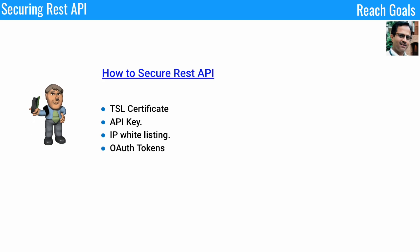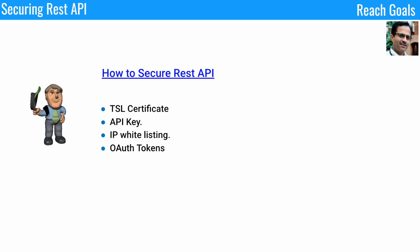The next one is OAuth tokens. Using OAuth is the most sophisticated way of securing the REST API and is used to protect complex APIs. This technique is used widely, from e-commerce to banking applications.